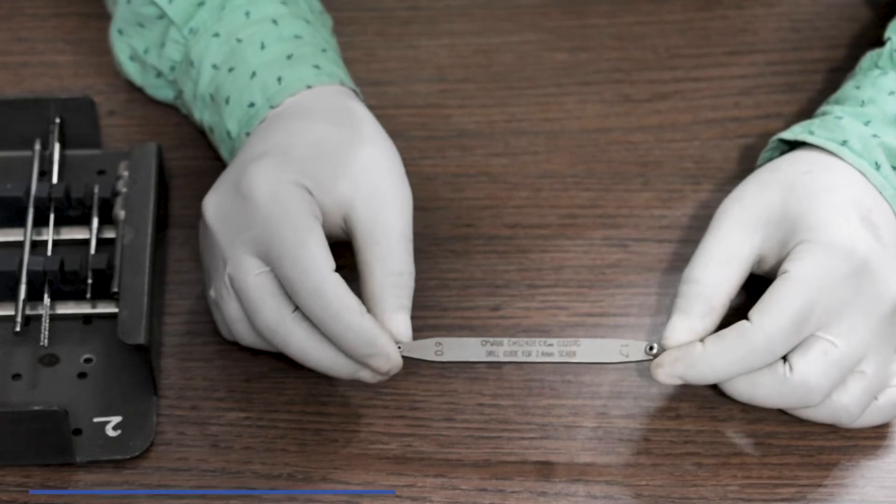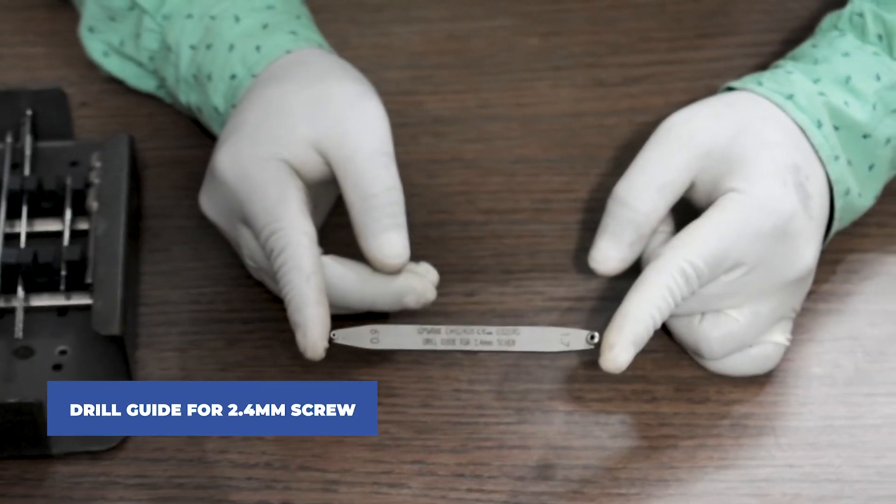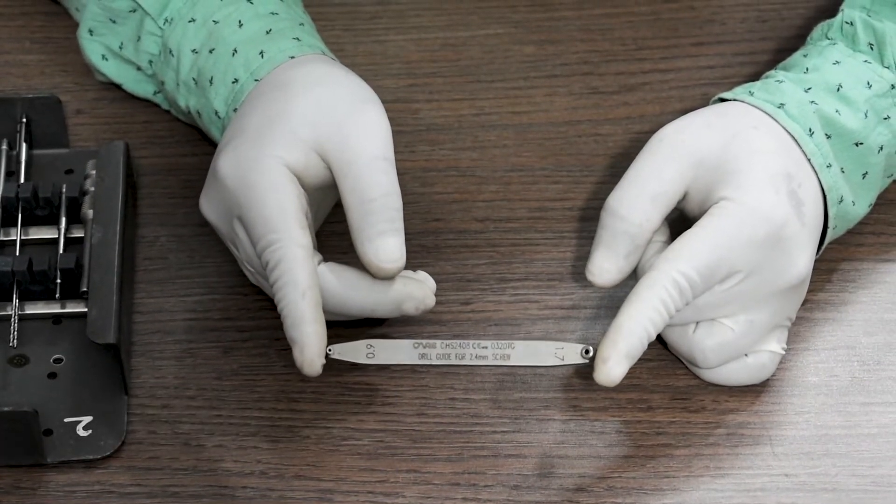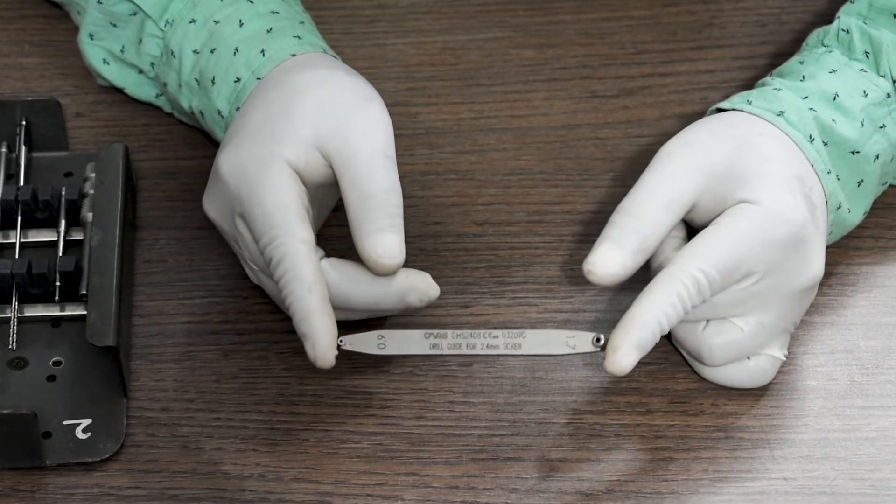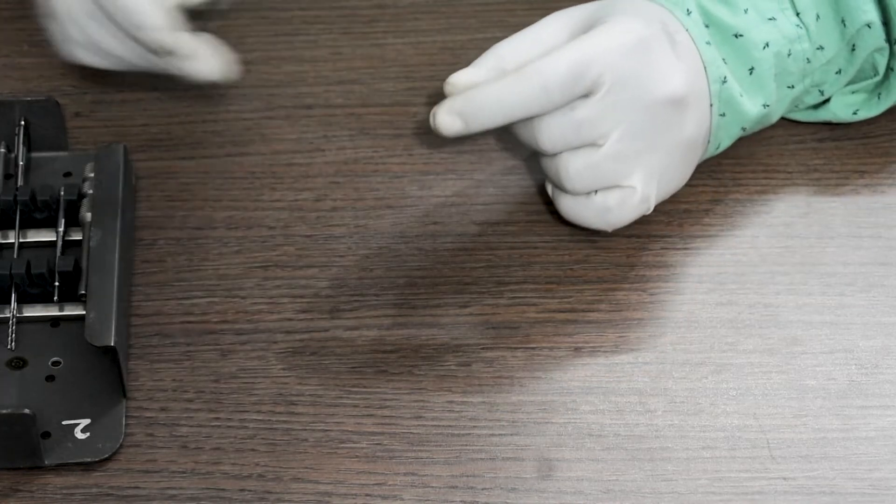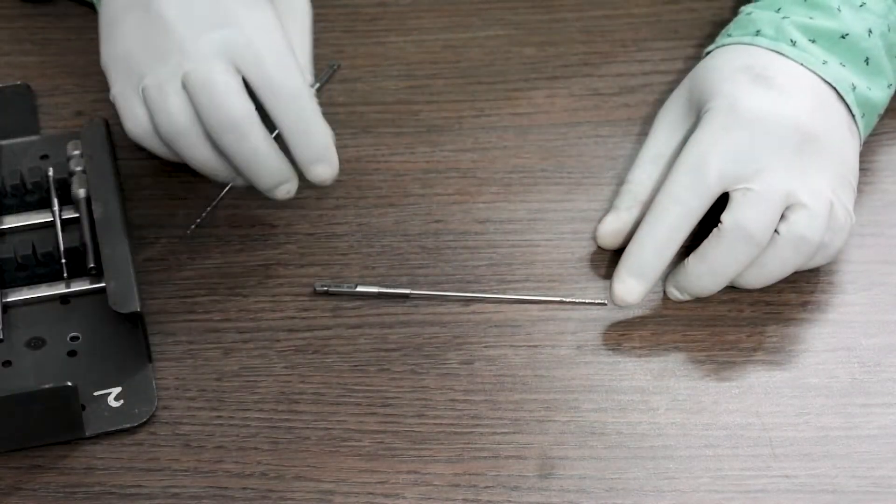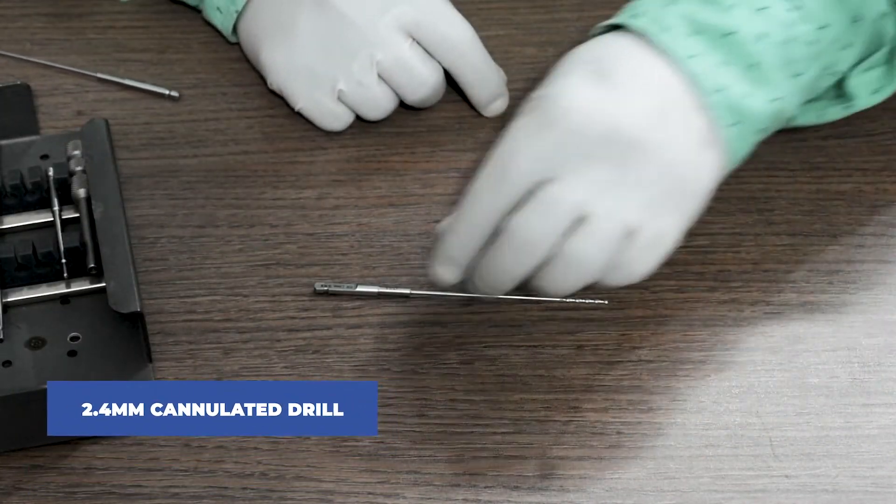This is the drill guide for 2.4mm Herbert Screw. This one is a 2.4mm cannulated proximal drill bit.